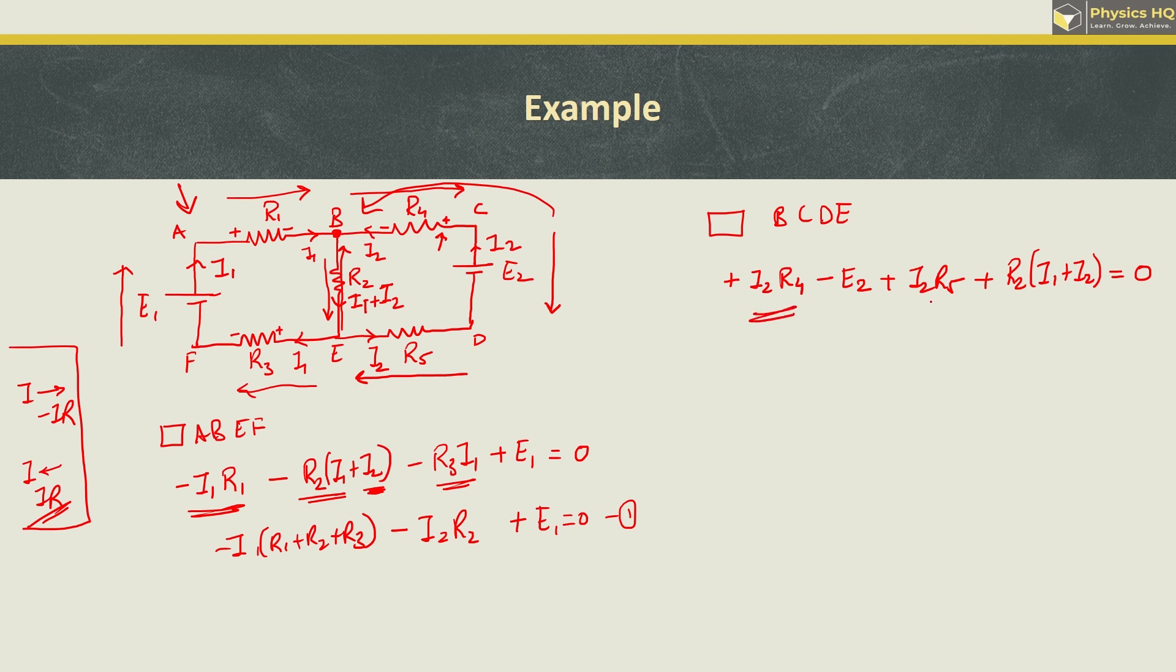We factor out I2 from R4, R5, and R2, giving us I2 times (R4 plus R5 plus R2) plus I1 R2 minus E2 equals zero. This is the second equation. I hope you understand.